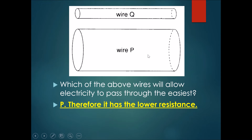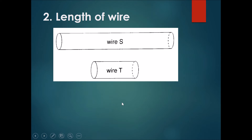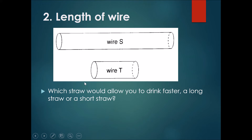So wire P has the lower resistance and wire Q has the higher resistance, just because of their cross-sectional area. The second factor is the length of the wire. Looking at wire S and wire T — if these were straws, which would allow you to get water from a drink faster, a long straw or a short straw? The shorter the straw, the faster the water reaches your mouth.